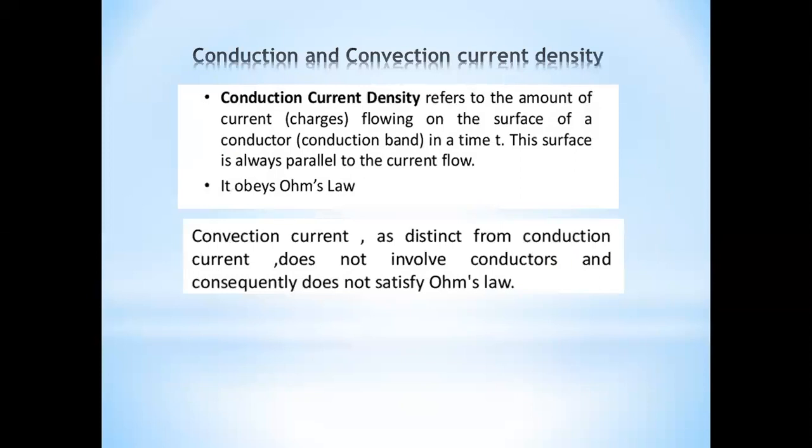Conduction current density refers to the amount of current flowing through the surface of a conductor in time t. This surface is always perpendicular to the current flow, and it obeys Ohm's law. Convection current, distinct from conduction current, does not involve conductors and consequently does not satisfy Ohm's law.